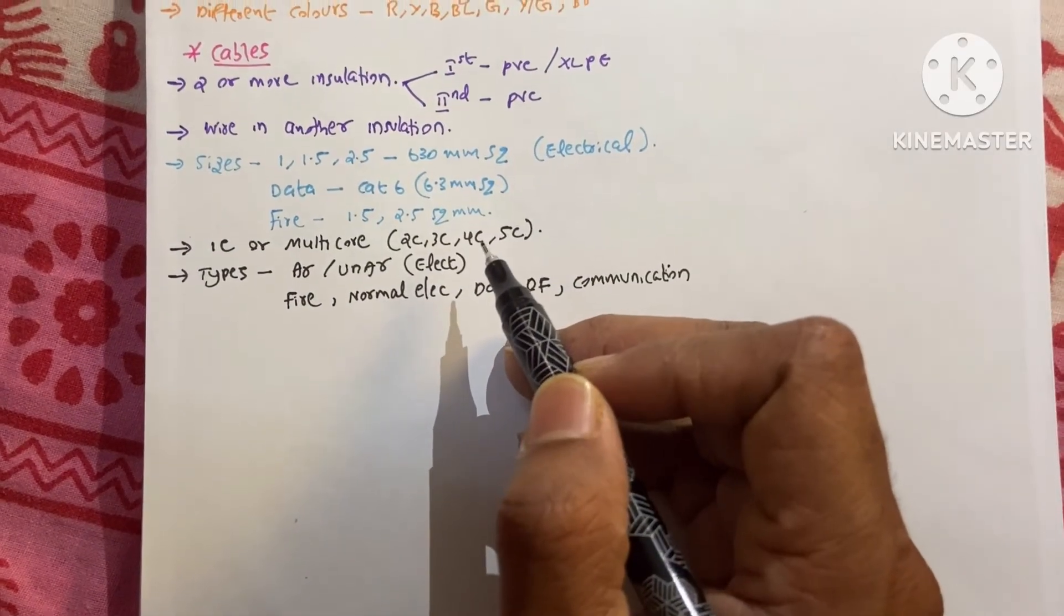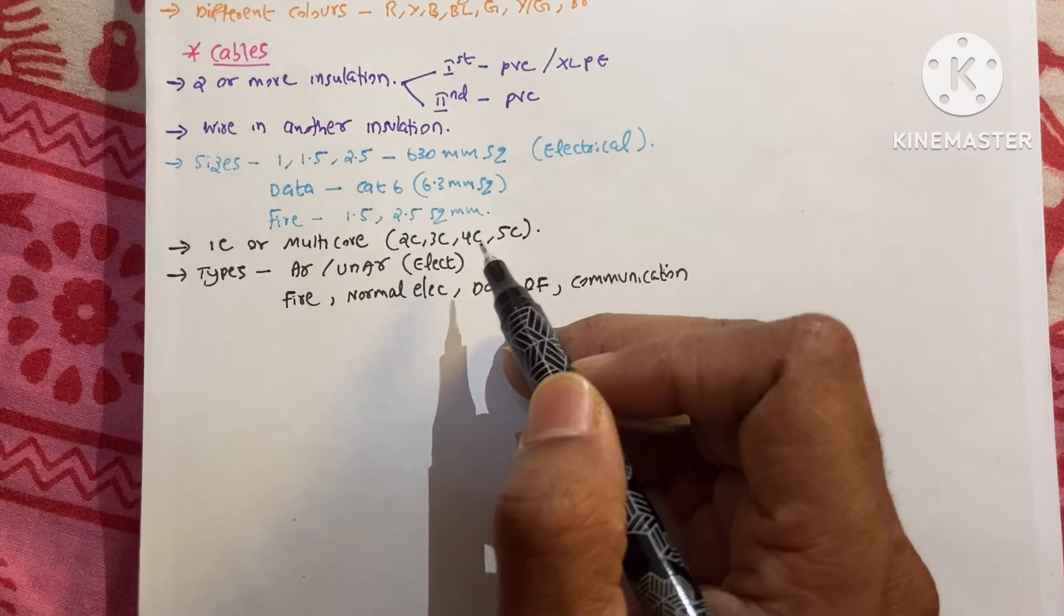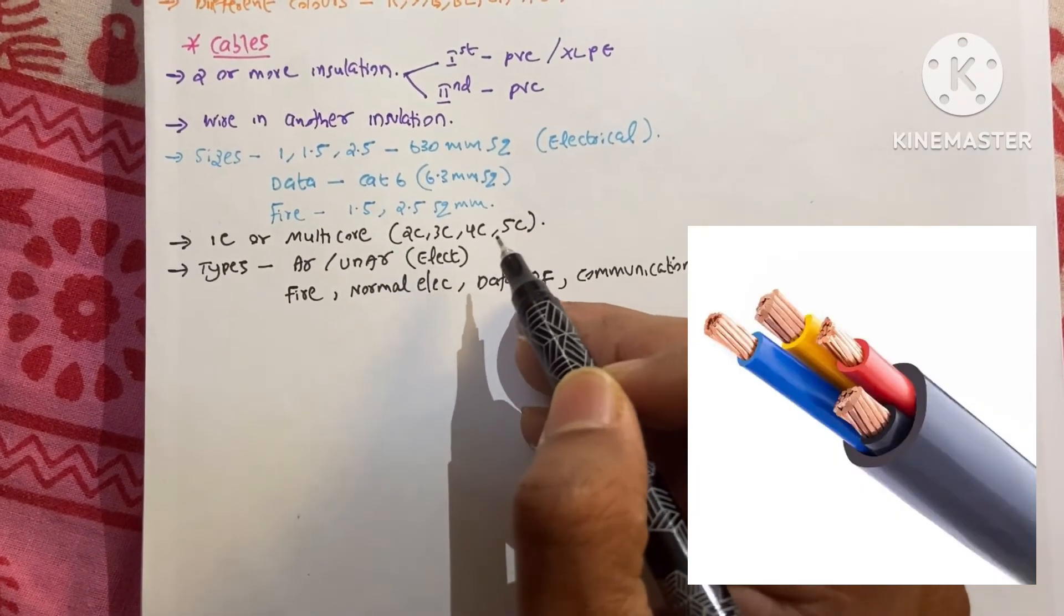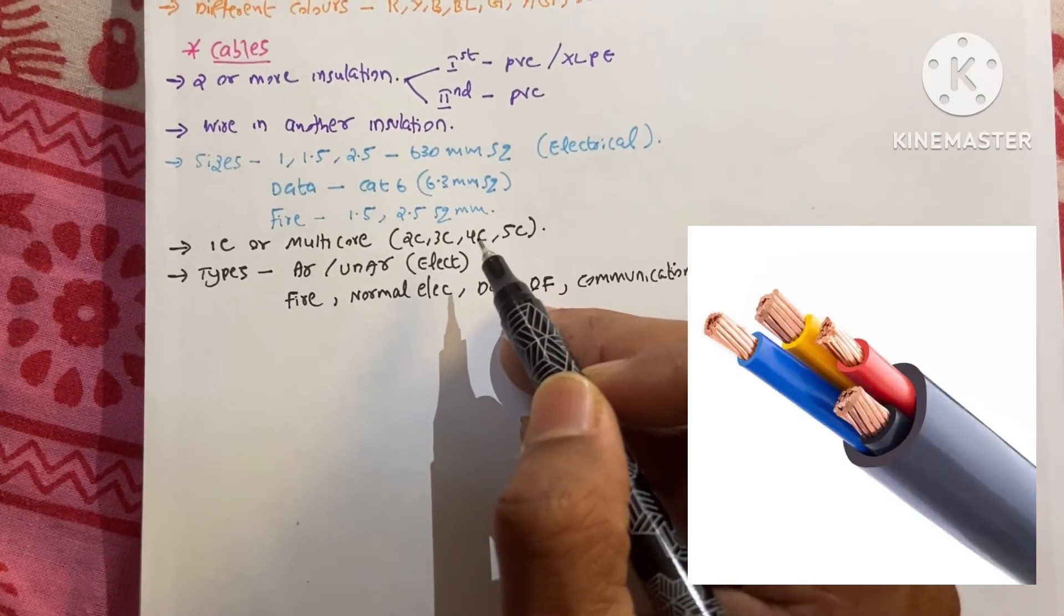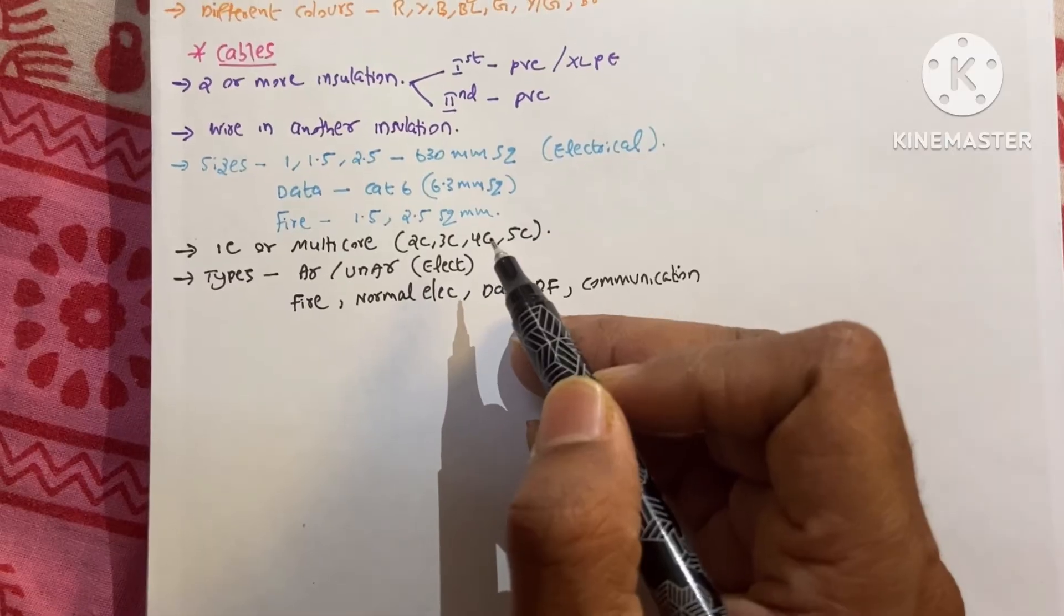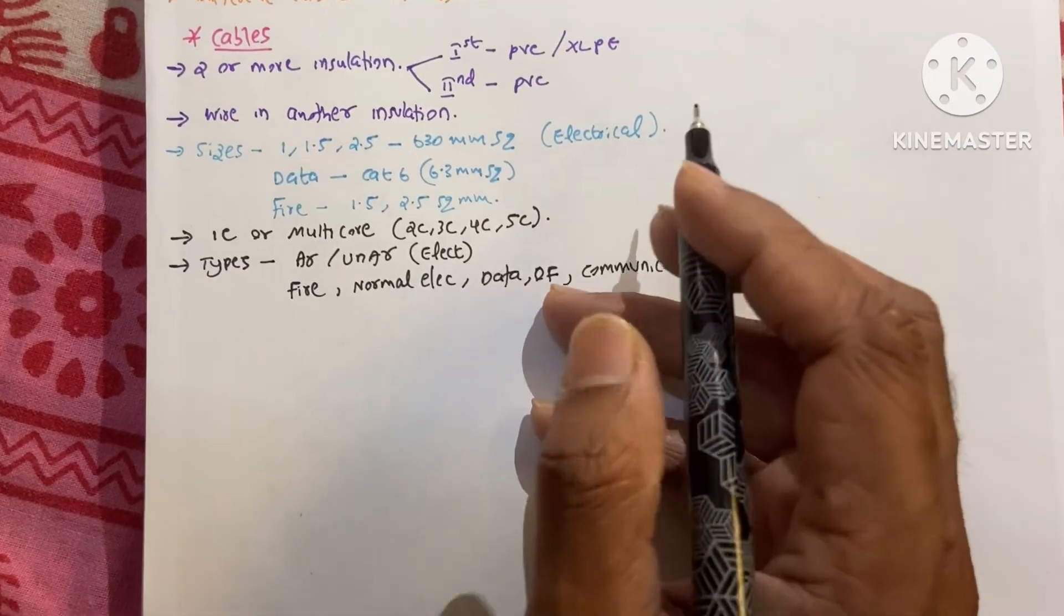And these different wires inside of this cable would be used for different applications. For example, if we use a four core cable in electrical application, we would use three cores for the phases. That means R, Y, B for the phases. And one black wire for the neutral purpose.